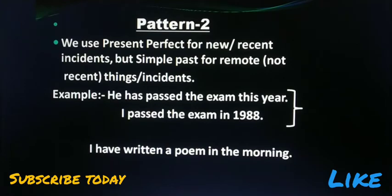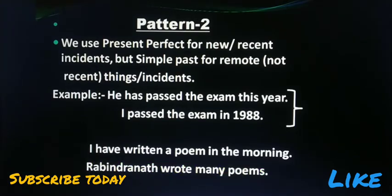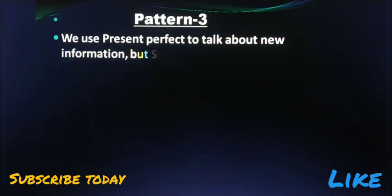Second example for pattern two: 'I have written a poem this morning' — present perfect tense, because I may write another poem again since I am still living. But when referring to a deceased poet, we use simple past tense, because unfortunately he died and cannot write any more poems. So we must refer to that incident in simple past tense.